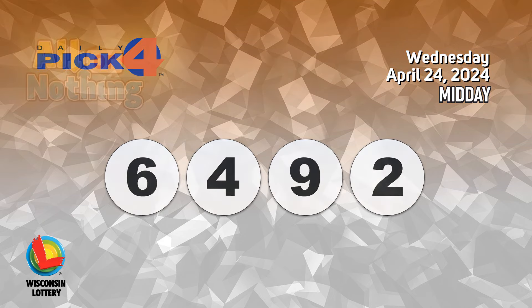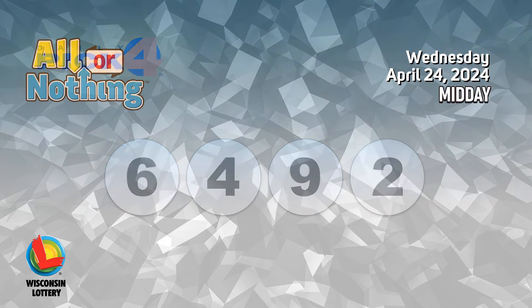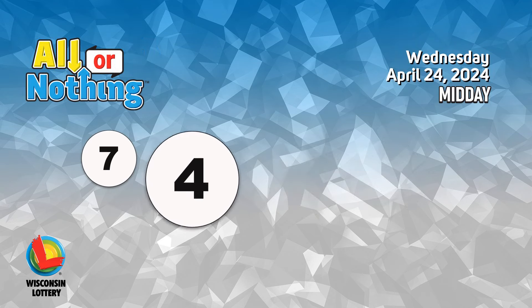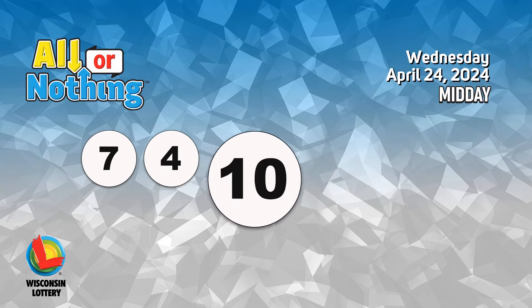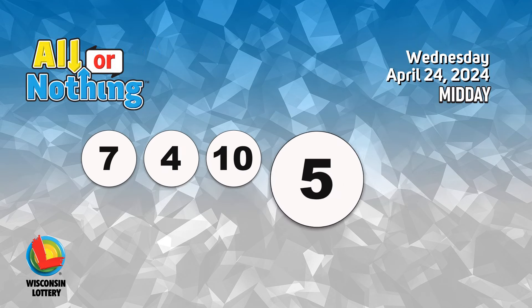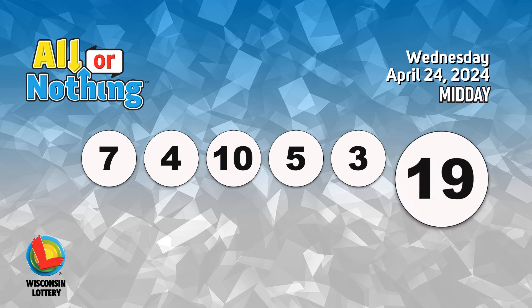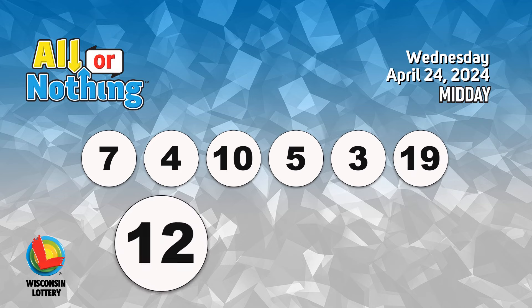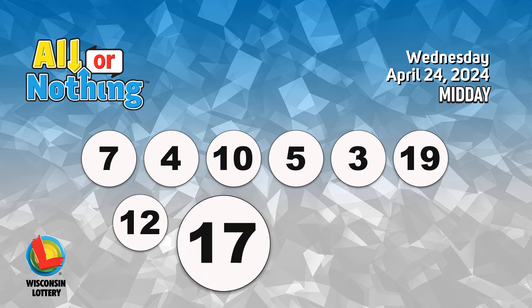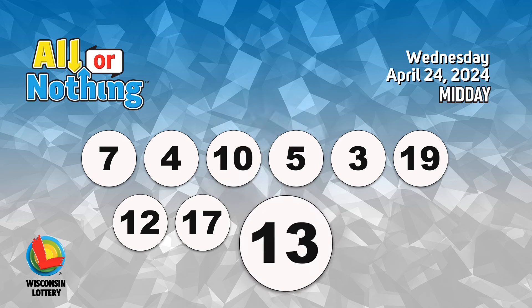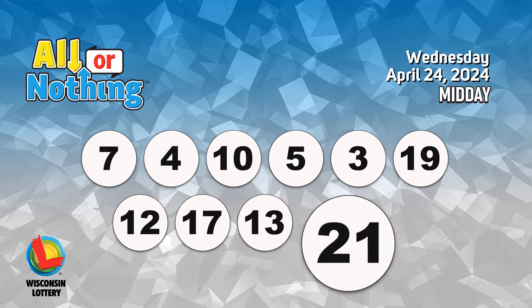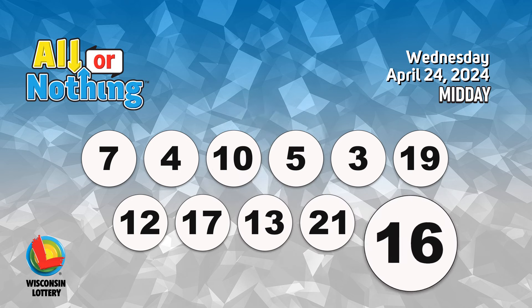The ALL OR NOTHING numbers are 7, 4, 10, 5, 3, 19, 12, 17, 13, 21, 16.